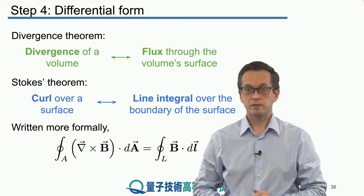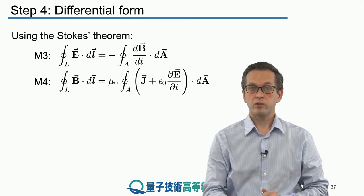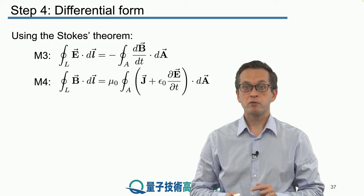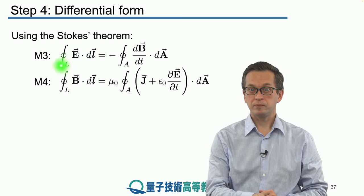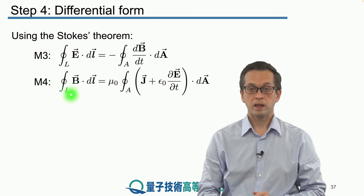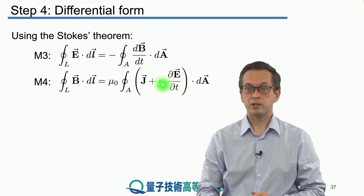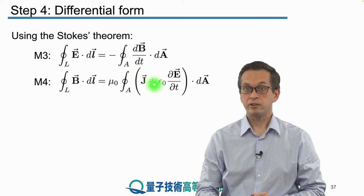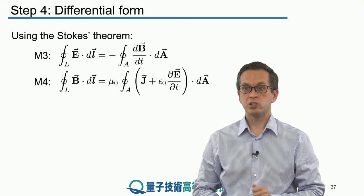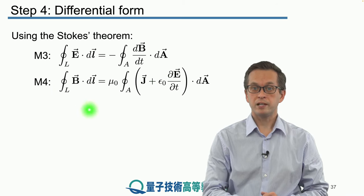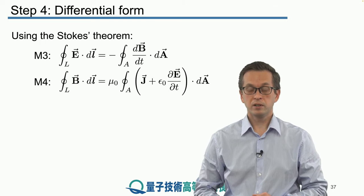Now we can apply Stokes' theorem to Maxwell's equations. To remind you, in integral form: Maxwell's third equation states that the line integral of the electric field equals the negative rate of change of the magnetic flux through the surface bounded by loop L. Maxwell's fourth equation states that the line integral of the magnetic field over a closed loop equals mu-naught times the surface integral of the current density plus the displacement current density, expressed as the time derivative of the electric field. What we do is substitute using Stokes' theorem into the left-hand side, changing the line integral into a surface integral, and then equate the integrands.